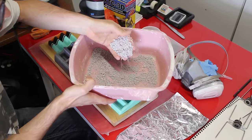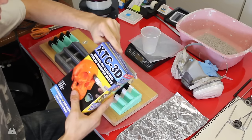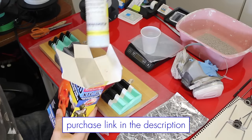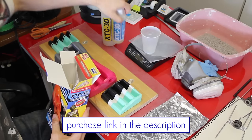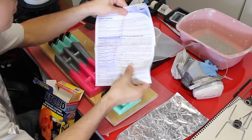And then I'm using XTC 3D, which is made to smooth out prints, but in this case we're going to use it for quite the opposite. It comes with a part A and part B that you mix together, this foam brush and a mixer. And of course, very importantly, the instructions.